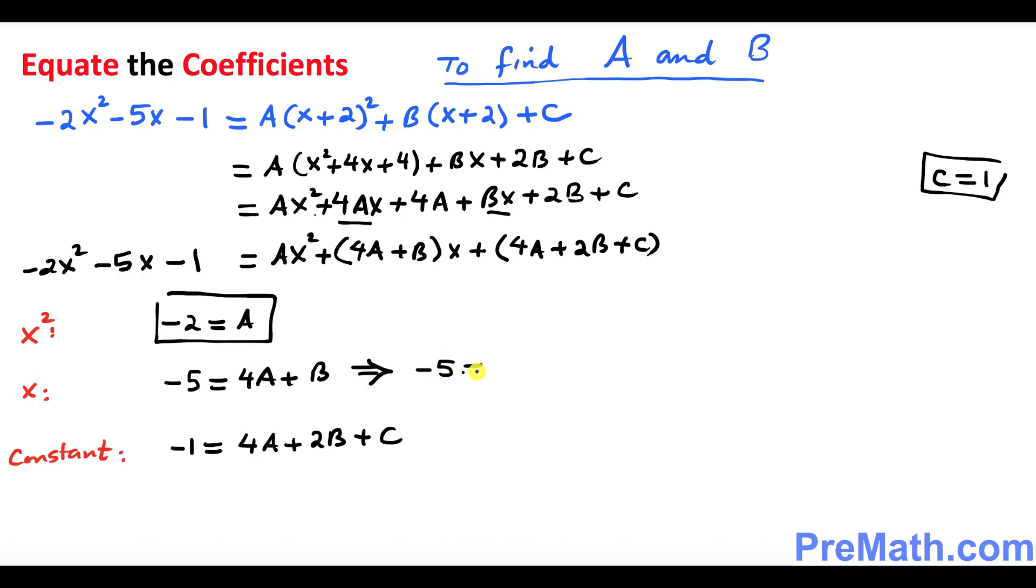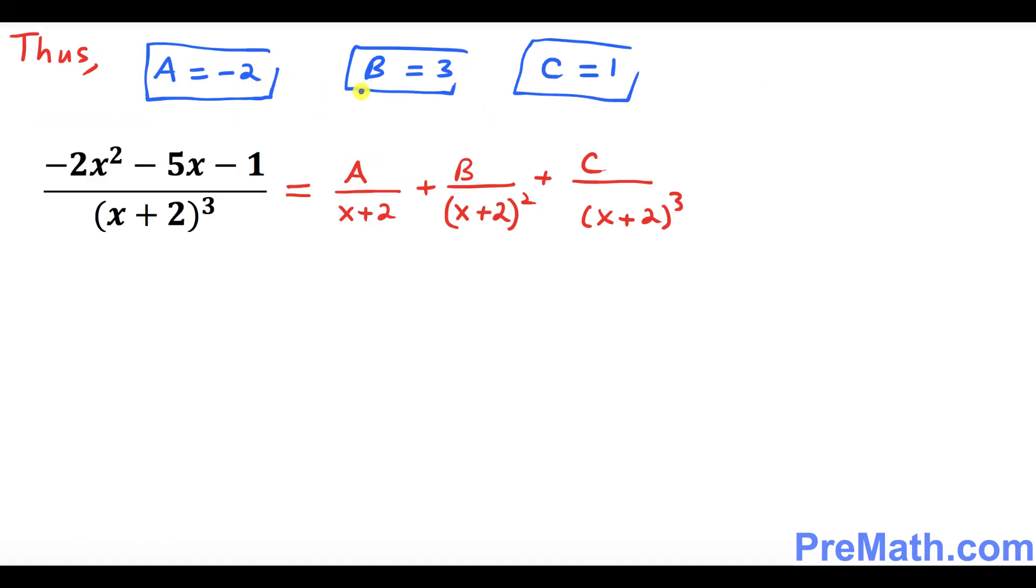Negative 5 equals to 4 times A is negative 2 plus B, which gives us what? It gives us negative 5 equals to negative 8 plus B, so B turns out to be 3. Isn't it? Thus we figured out A equals to negative 2, B equals to 3, C equals to 1.